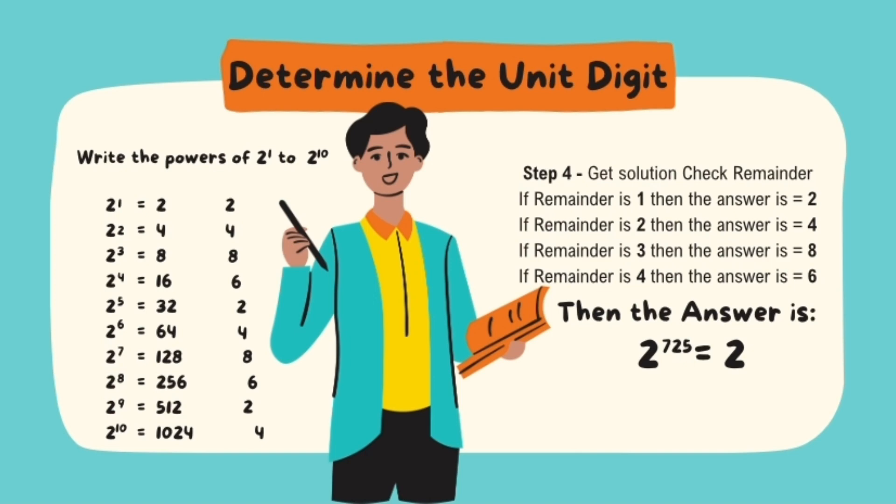Since the remainder is 1, then the unit digit of 2 raised to 725 is 2.